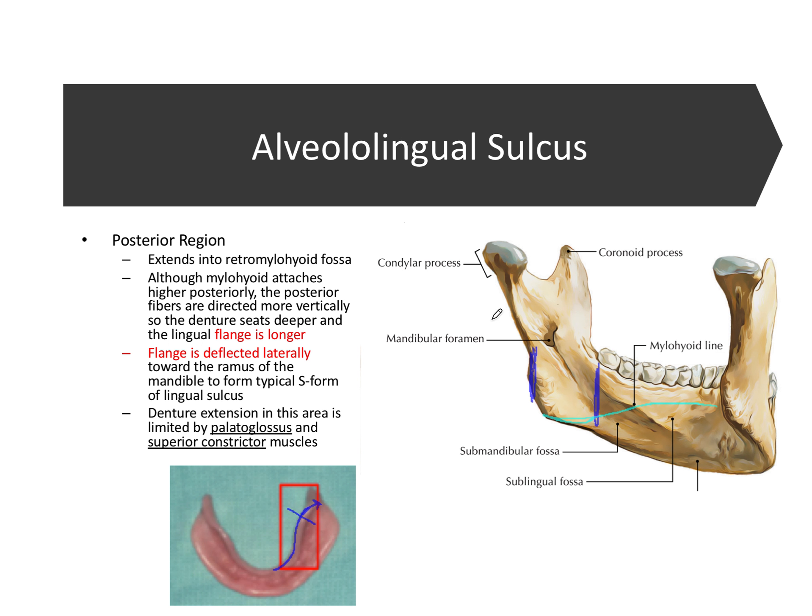Last, we're going to talk about the buccal shelf. Looking at this image with many labels — most of which we've covered — you can see the alveololingual sulcus between the ridge and the tongue, the retromolar pad at the distal extension of the ridge, and now the buccal shelf, which is just lateral to the posterior mandibular alveolar ridge. It's a flat landing area that provides support for the denture, lying perpendicular to occlusal forces, making it an ideal support structure. The buccinator attaches here at the base of the buccal vestibule.